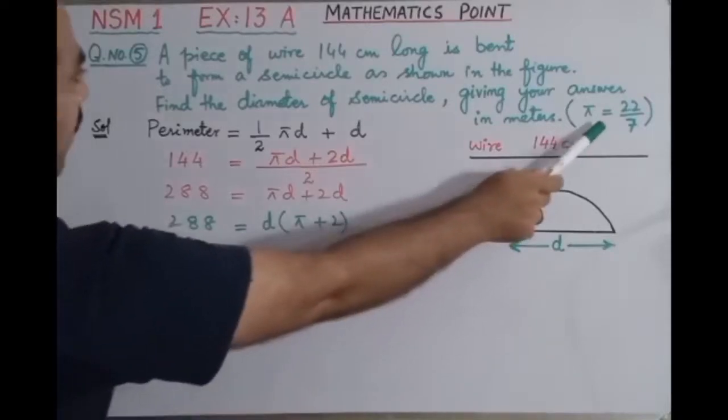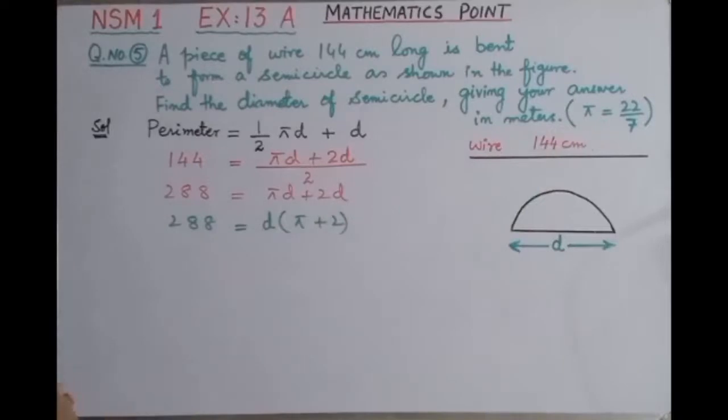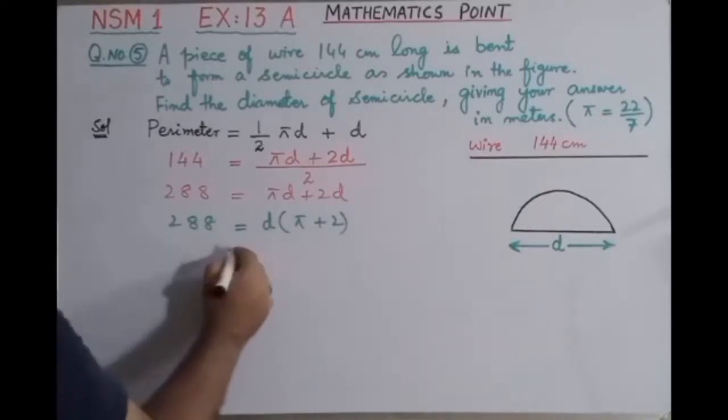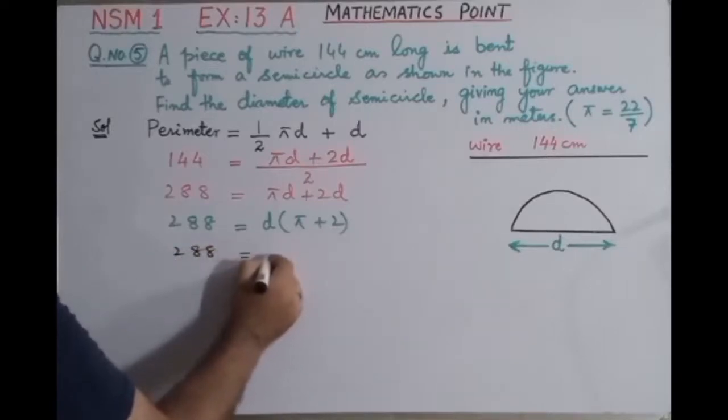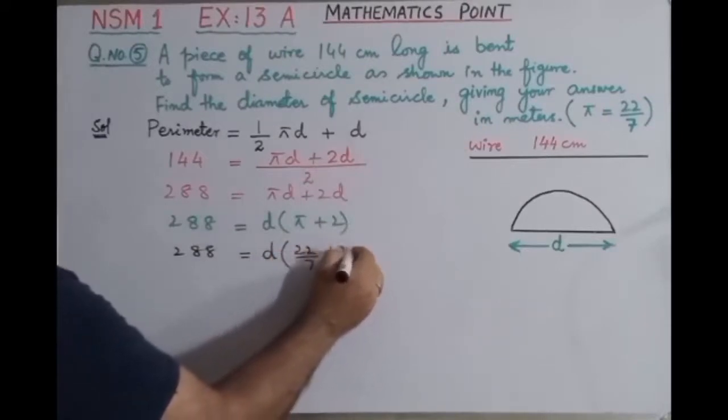Now we will use the value of pi that is given in this question, 22 by 7. By putting the value here we have 288 equals d, what is the value of pi? 22 by 7 plus 2, bracket close.